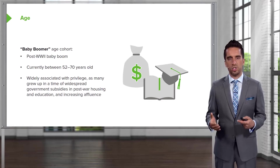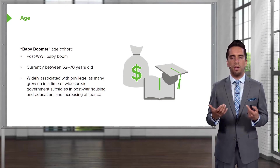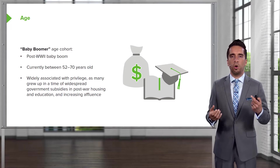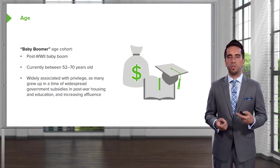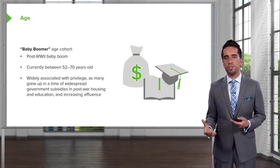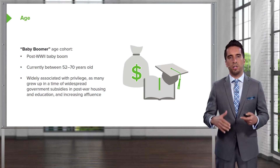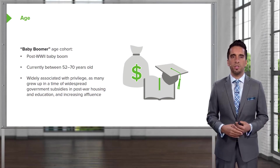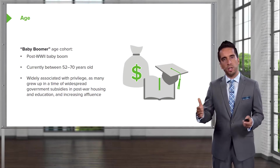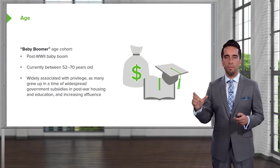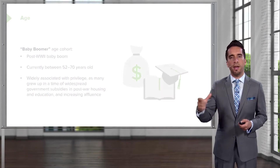This group was associated with privilege — they grew up with quite a bit. Life was starting to get good. They grew up in a time of widespread government subsidies, post-war housing, education, and increasing affluence, at least in North America. That group of baby boomers is now getting a little bit older, but we've categorized them based on that shared event and timeframe.